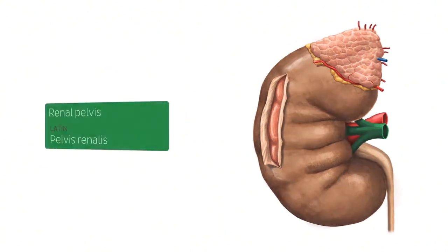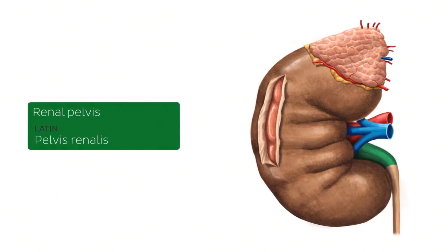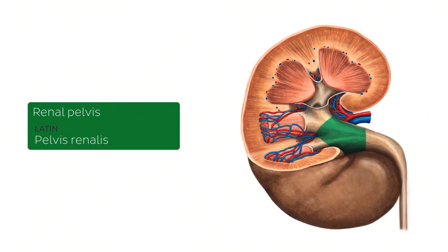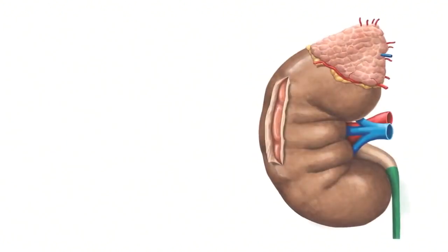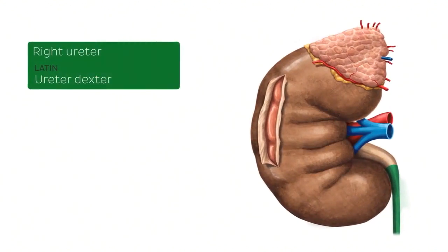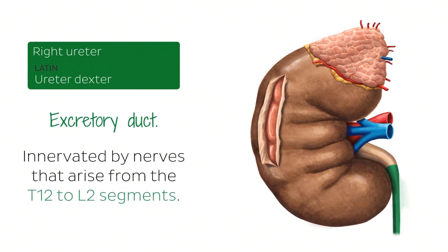The next structure highlighted in green is the renal pelvis. The renal pelvis is found on the hilum of the kidney and is the beginning of the ureter. Since I mentioned the ureter, you can also see it now highlighted in green — specifically the right ureter, as you do have a left ureter. Both ureters are excretory ducts innervated by nerves that arise from the T12 to L2 segments of the spinal cord.